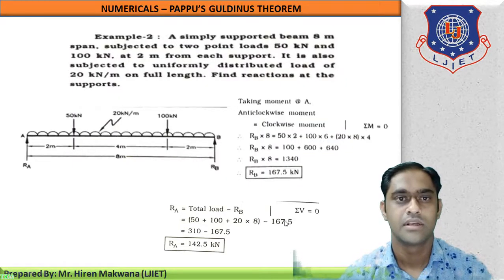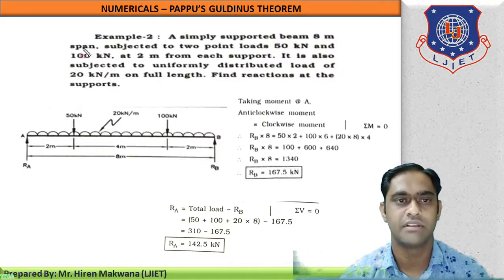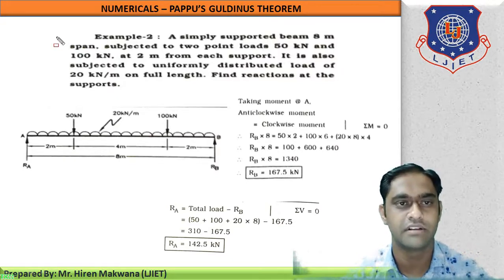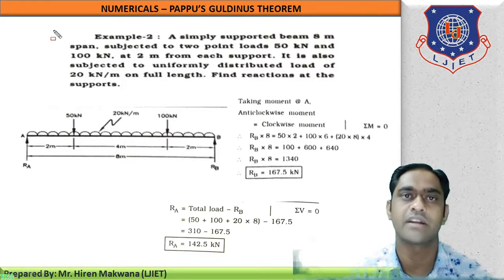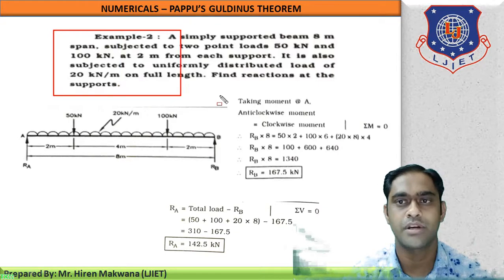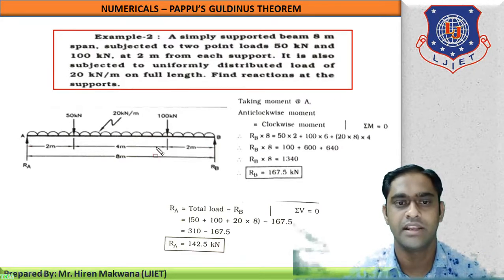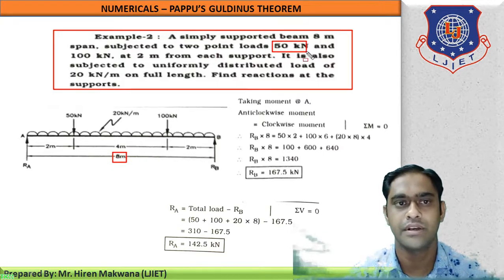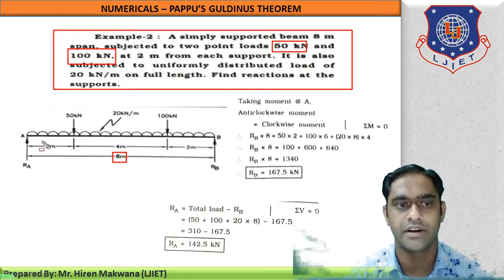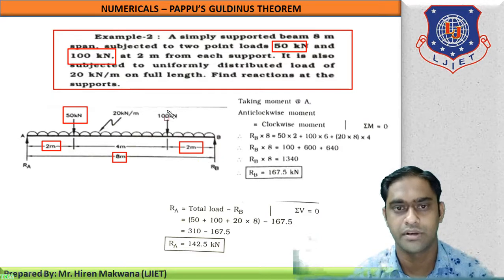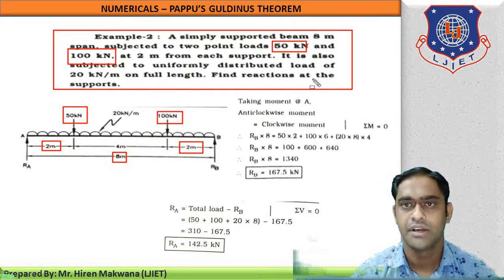Now in this example, the figure is not given — only the wordings are given, and we have to draw the figure ourselves. A simply supported beam of 8-meter span is subjected to two point loads: 50 kN and 100 kN. The 50 kN load is at 2 meters from the left support, and the 100 kN load is at 2 meters from the right support.